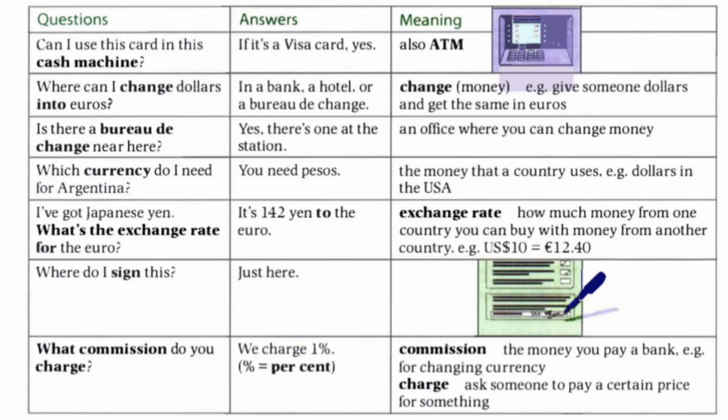And the next one: Where do I sign this? Just here. You can see the picture of signing and the meaning part. And the last one: What commission do you charge? We charge 1%. Commission means the money you pay a bank, for example for changing currency. And charge means ask someone to pay a certain price for something.